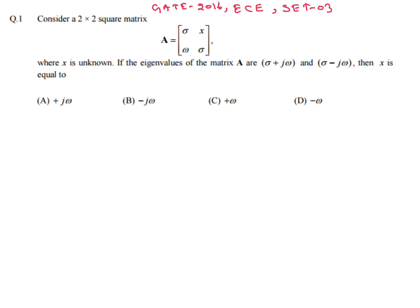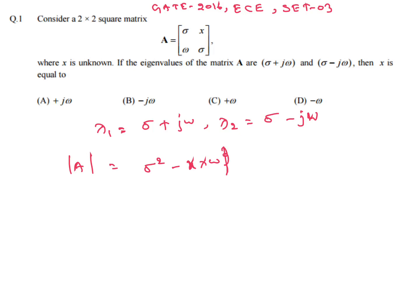Let λ₁ = σ + jω and λ₂ = σ − jω. The determinant of matrix A equals σ² minus x·ω. We know determinant equals product of eigenvalues, so σ² − x·ω equals λ₁·λ₂, which is (σ + jω)(σ − jω).